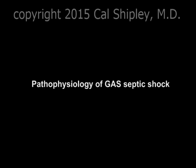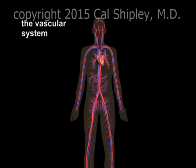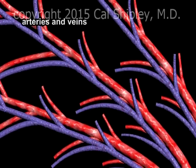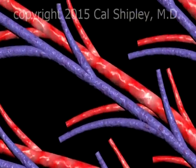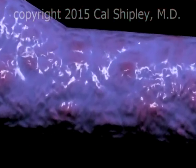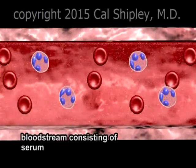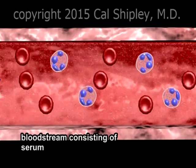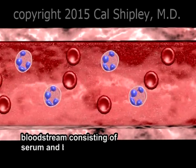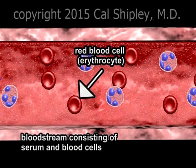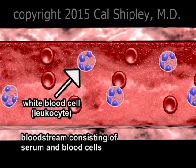Let's take a look now at the pathophysiology of Group A Streptococcus septic shock. The pathophysiology of Group A Streptococcus septic shock is very similar to other forms of bacterially-induced septic shock, with some minor variations. The human vascular system carries oxygenated blood to the furthest reaches of the body, and then returns it to the heart via a complex web of arteries and veins. The blood which courses through the vascular system is composed of serum, which contains proteins, electrolytes, and nutrients such as glucose, and blood cells — red blood cells to carry oxygen to tissues, and white blood cells, whose primary function is to provide immune protection against invading bacteria and viruses.